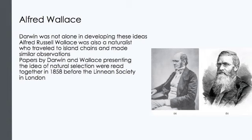One of the prevalent ideas at the time was the idea of a fixed species. The Greek philosopher Aristotle, whose views had an enormous impact on Western culture, generally held that species are fixed or permanent and do not evolve. Judeo-Christian culture reinforced this idea with a literal interpretation of the biblical book of Genesis, which tells the story of each form of life being individually created in its present-day form. The idea that all living species are unchanging in form and inhabit an earth that is only about 6,000 years old dominated the intellectual climate of the Western world for centuries.